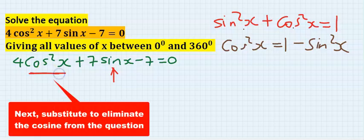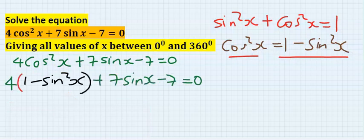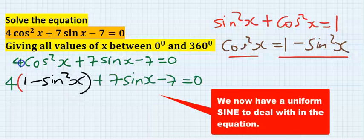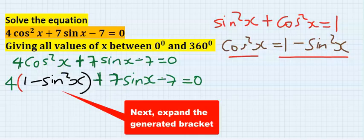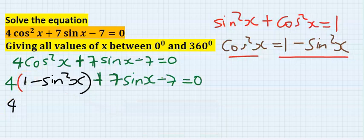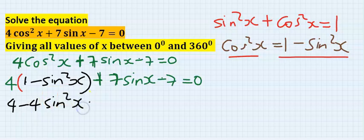Now the four remains the same, the plus remains the same, seven sine sine, minus seven. The only thing that changed was this. Next, expand the bracket. Four times this one is four, four into this will give you minus four sine squared x. I now have plus seven sine x minus seven.